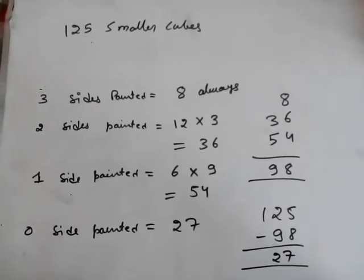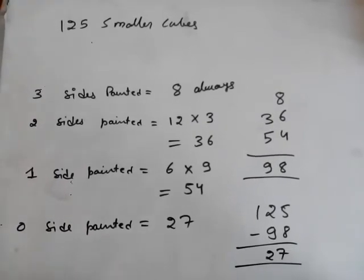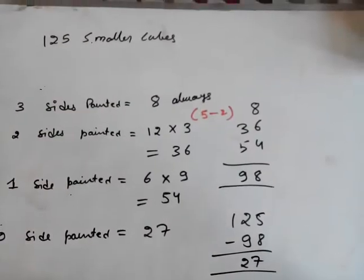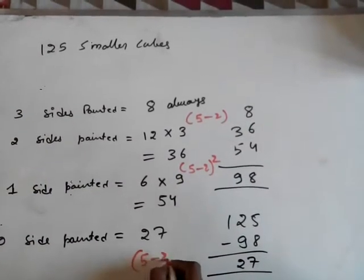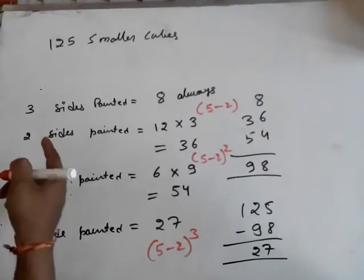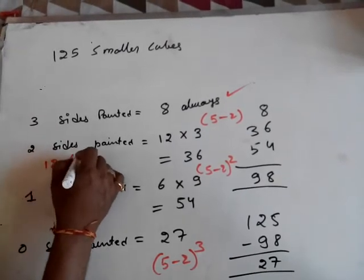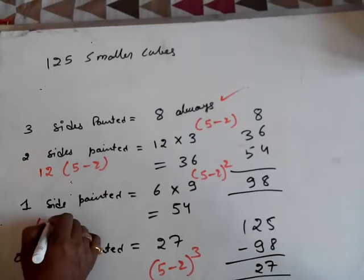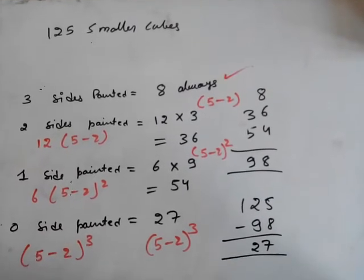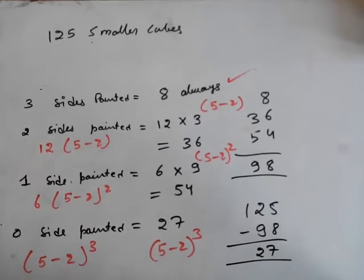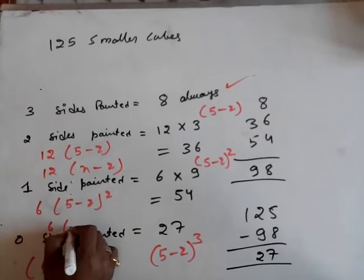This was the case when the side of my bigger cube was 5 cm. Now what if the side is some other number? I need to generalize these formulas. I can write 3 as (5−2), 9 as (5−2)², and 27 as (5−2)³. So for a cube of side n cm split into unit cubes: 3 sides painted = always 8; 2 sides painted = 12×(n−2); 1 side painted = 6×(n−2)².